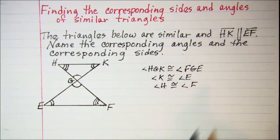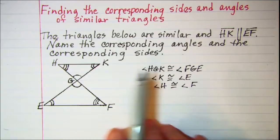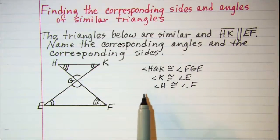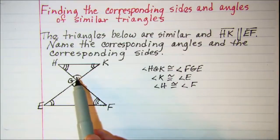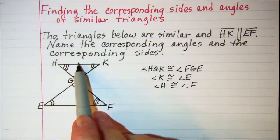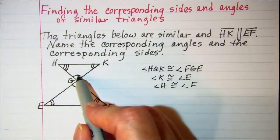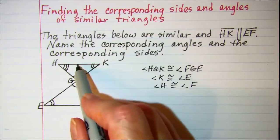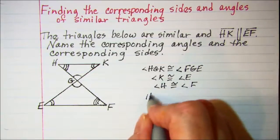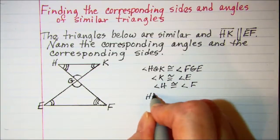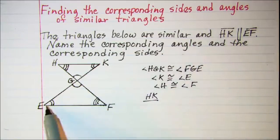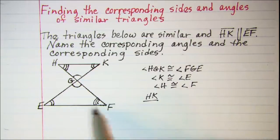Then we also need the corresponding sides, so we'll write those in a proportion. We can say HK, which is across from our vertical angles, so HK is in a ratio to EF.